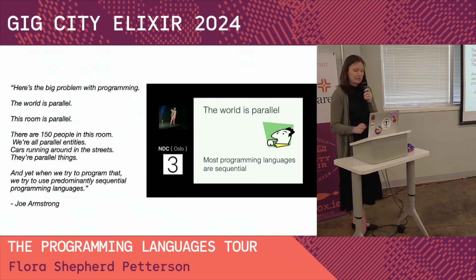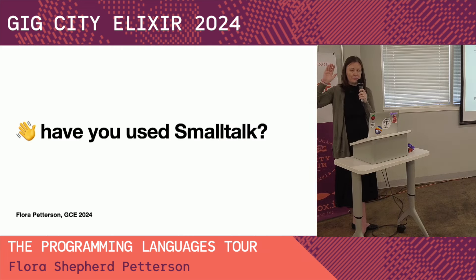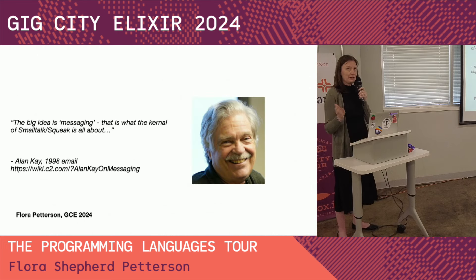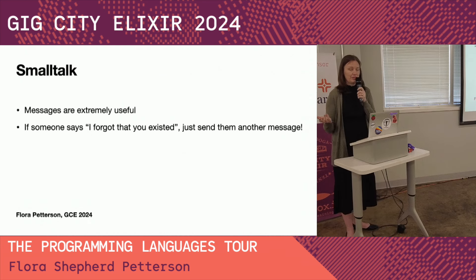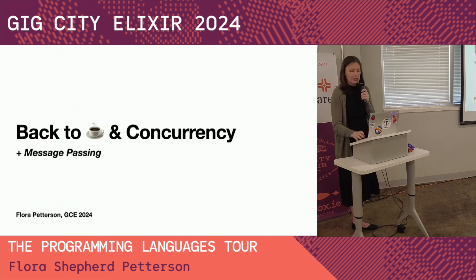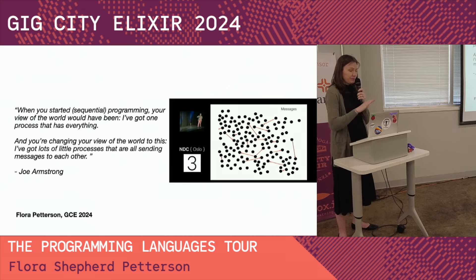Another thing to layer on top of this is a concept from Smalltalk. Smalltalk is all about message passing. Alan Kay has a quote about it — if someone says they forgot you existed, just send another message and they'll find out what's going on with you. So back to concurrency: Joe talks about the fact that you have to have message passing, otherwise these processes would just be totally isolated.